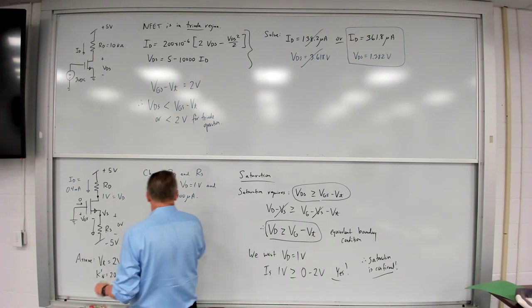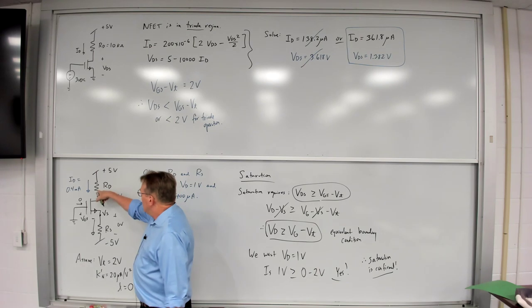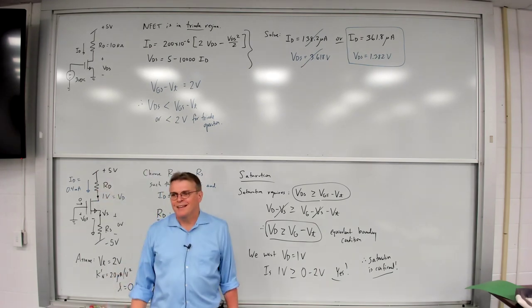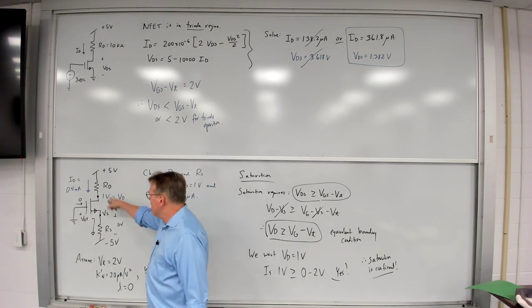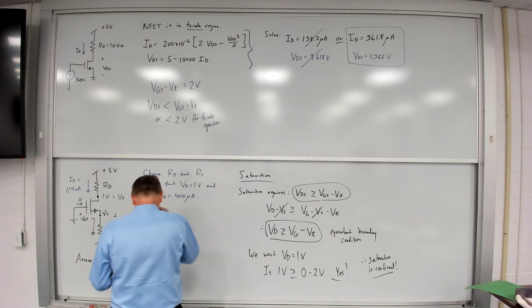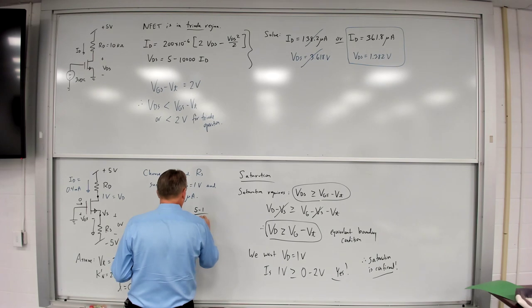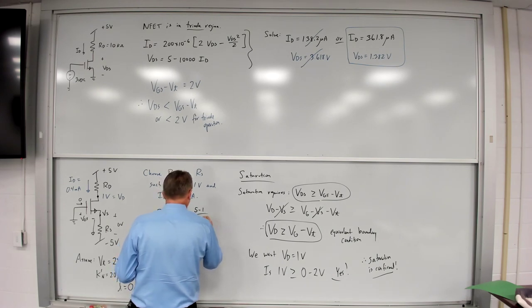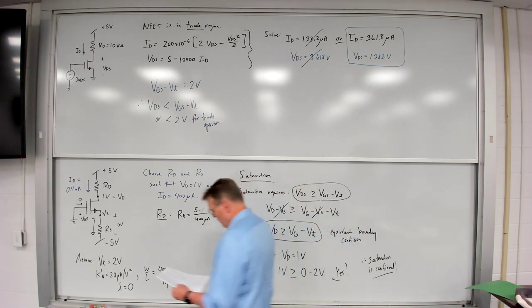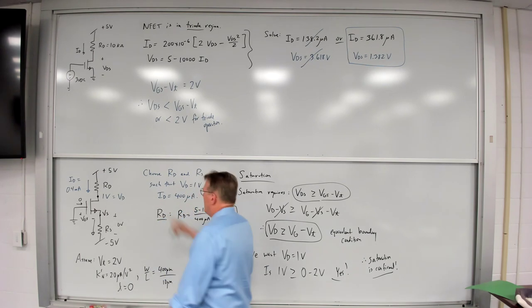Saturation confirmed. Let's calculate RD. That's just Ohm's law: (5 − 1) / 400 μA = 4 / 0.4 mA = 10 kΩ. So RD = 10 kΩ.